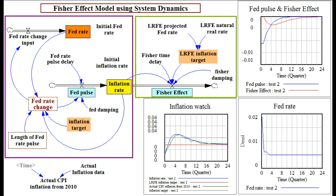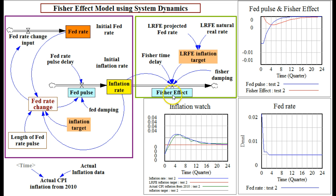Let me start describing the model. Right here in the center is the inflation rate — this is the hub of the model. To one side you have this purple square, and to the other side you have this green square. The inflation rate is affected by this Fed pulse: whenever the Fed wants to be proactive against the inflation rate, they change the Fed rate. This Fed pulse is the Fed reacting to the inflation rate, and then the inflation rate will react to the Fed pulse, which is a Fed action. And then on the other side, in this green box, will be the Fisher Effect.